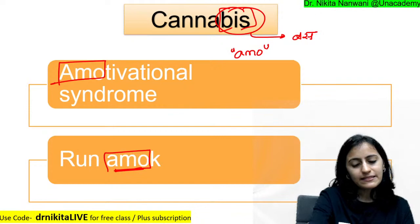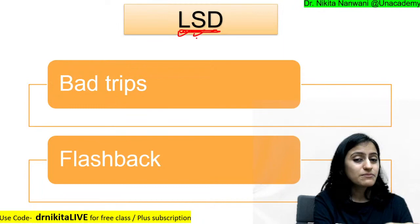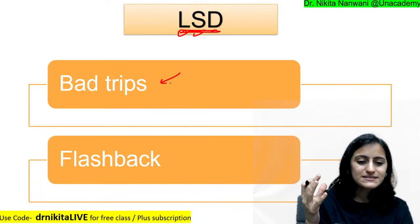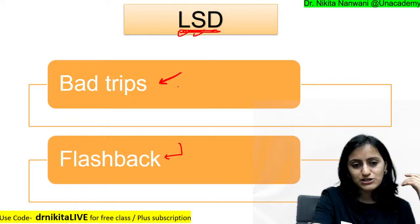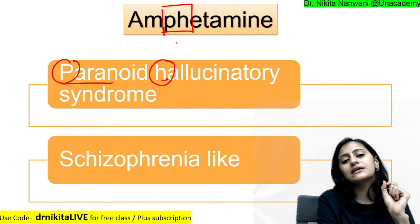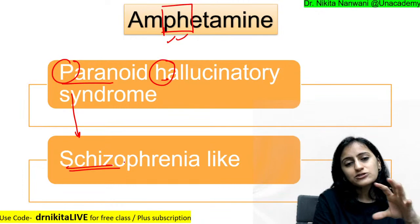LSD: the classical features are bad trips and flashbacks. Remember LSD with 'love sex dhoka' — someone went on a trip, had a bad experience, and the flashbacks of that bad experience keep coming back. So LSD causes bad trips and flashbacks. Next, amphetamine: paranoid hallucinatory syndrome — remember P and H. Amphetamine causes paranoid hallucinatory syndrome, which is like schizophrenia-like symptoms.